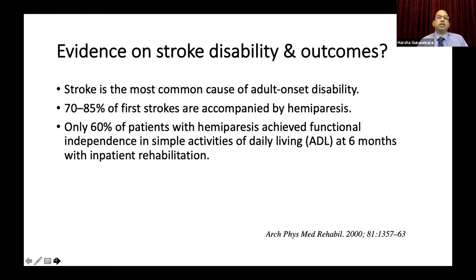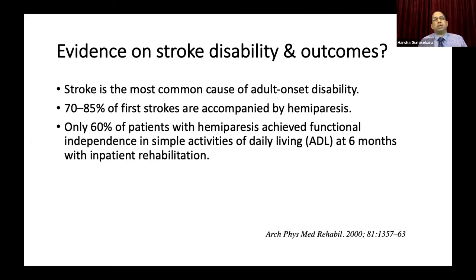Looking at the evidence on stroke disability and outcomes: worldwide, stroke is the most common cause of adult-onset disability, and 70 to 85 percent of first strokes are accompanied by hemiparesis. Studies have shown that only 60 percent of patients with hemiparesis achieved functional independence in simple activities of daily living at six months with inpatient rehabilitation.